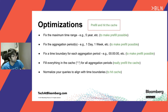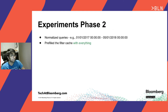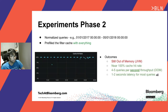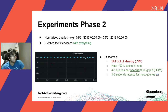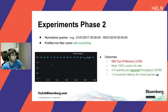We ran the same JMeter tests as experiment one but with these optimizations. As you can see from the graphs, we had 100% cache hit rate, and our throughput increased significantly from 10 queries per minute to 5 queries per second — around 30 times better. As a result of always hitting the cache, the query latency also reduced drastically from tens of seconds to well within a second. However, we were still getting memory errors.